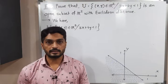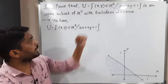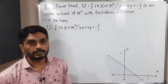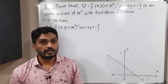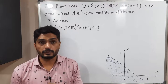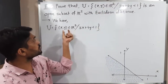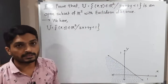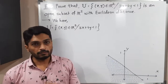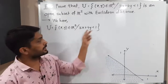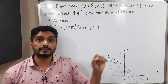Let us discuss this example. We have the set U and we have to prove that it is an open subset of ℝ² with Euclidean distance. U is a collection of all points of ℝ² which satisfy the condition 3x + 4y < 1. If we consider it equal to 1, we have 3x + 4y = 1, which is the equation of a straight line.